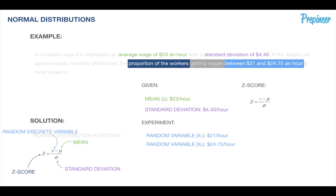For our first random variable, we plug in our information and find a z-score of negative 0.456. For our second random variable, we find a z-score of 0.398. That's where we will start.